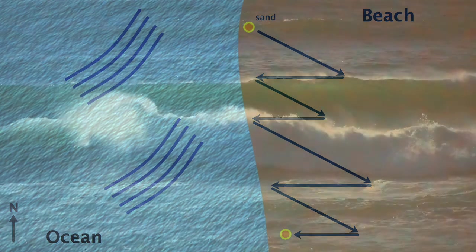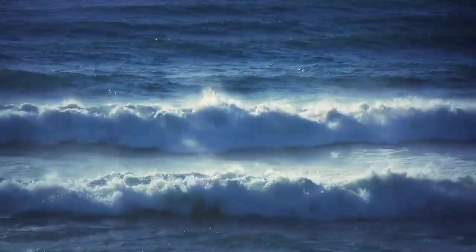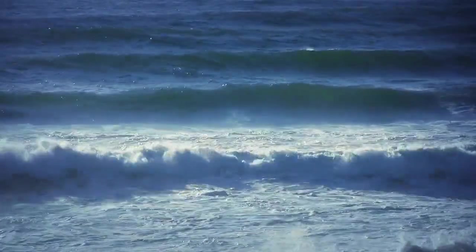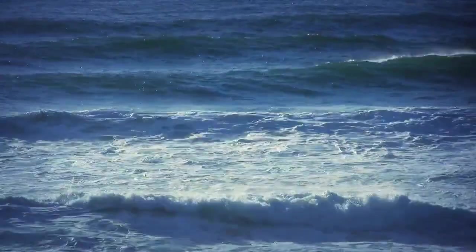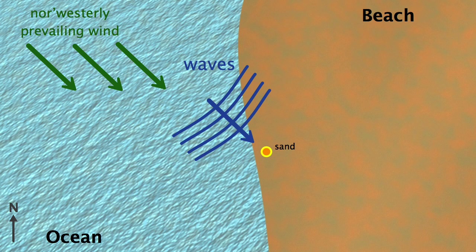Why does this happen? To answer that question, we need to look further out to sea, to where the waves are created. Waves on the surface of the ocean are a response to the prevailing wind. In different parts of the world, prevailing winds blow in different directions, and they may change direction depending on the weather. For this explanation, let's just say the prevailing wind always blows from the northwest. The waves that are generated by this wind travel in the same direction, so in this case they will strike the beach from the northwest. They push sand grains up the beach in that same direction.